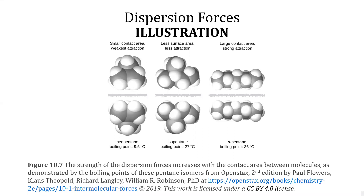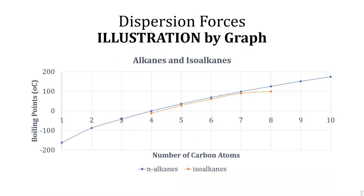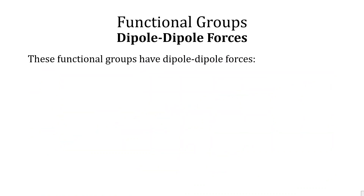Neopentane has the weakest attractive forces because it has the smallest surface area compared to isopentane and n-pentane, which are greater because they have larger surface areas. The trend is: the larger the surface area, the stronger the attractive force. This graphical illustration shows boiling points for various alkanes and iso-alkanes — the more carbons present in the parent chain, the higher the boiling point.